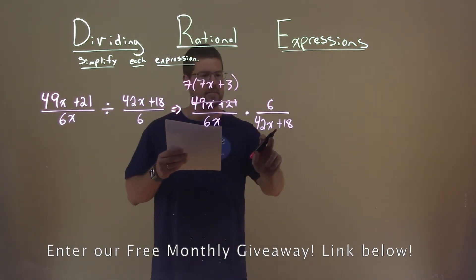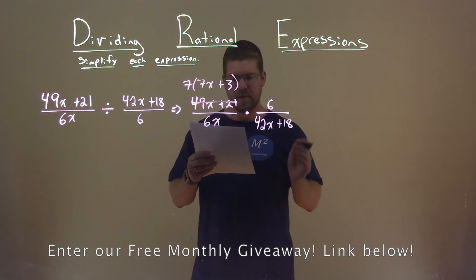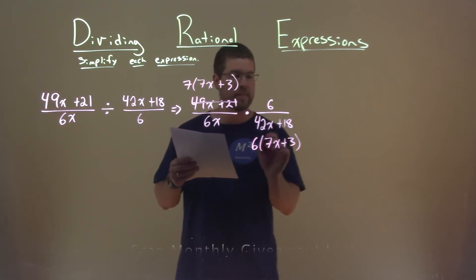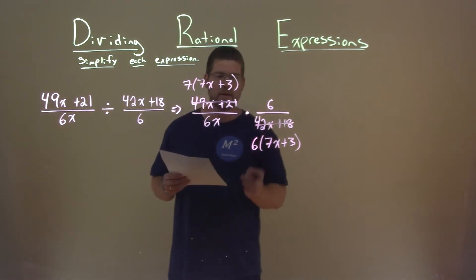Down here, same thing, 42x plus 18, I can pull out a 6, and I'm left with 7x plus 3. Cross that out, we're replacing it.